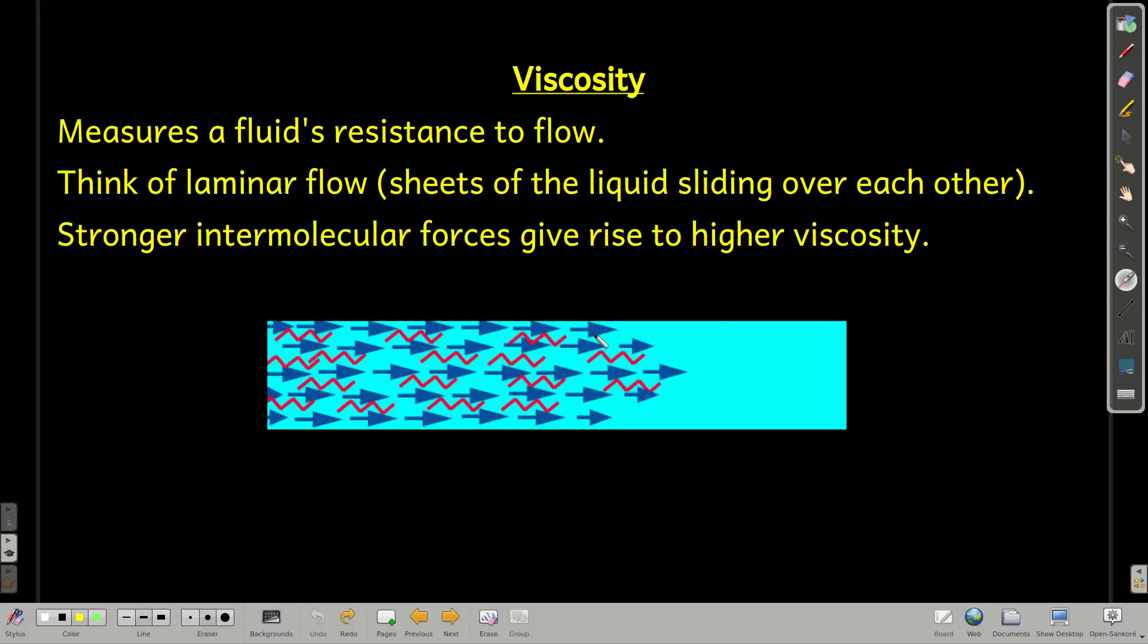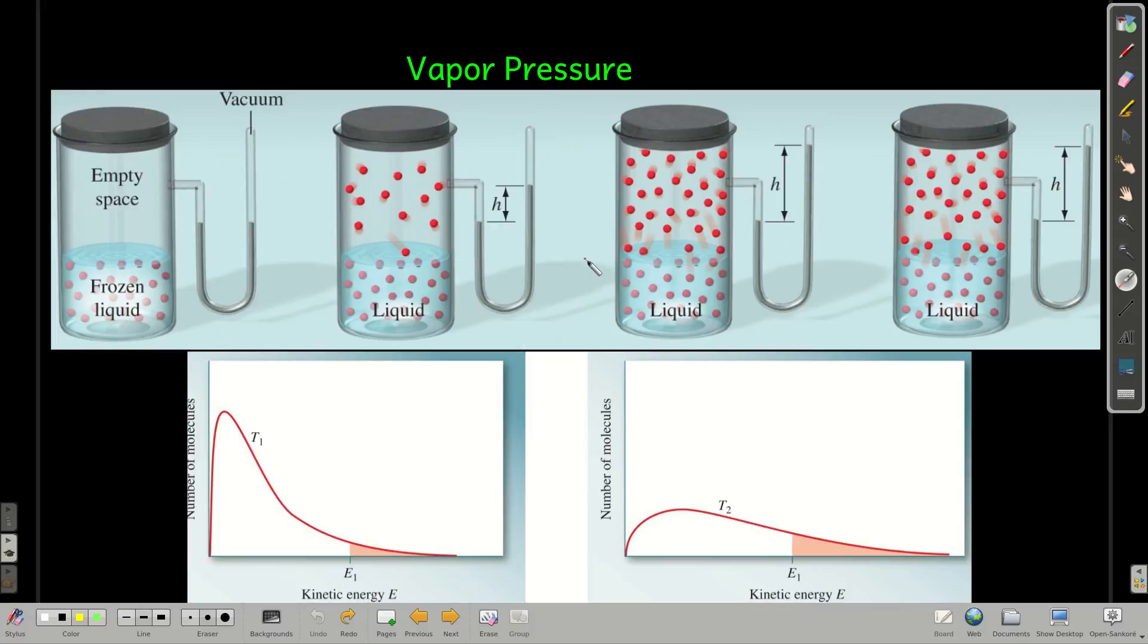An example of something with pretty high viscosity would be maple syrup. It has a lot of hydrogen bonding and it's thick, which means that as you pour it, those sheets have a lot of intermolecular forces to overcome.